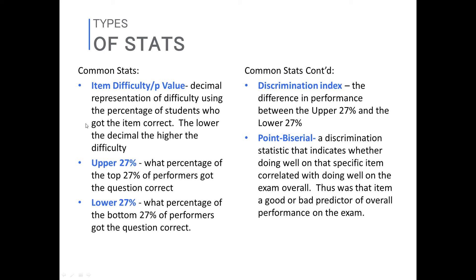The discrimination index takes everything a little bit further — it's the difference in performance between your upper and lower 27%. It tells you: did this question discriminate between my best performers and my worst performers? That's generally something you're looking for a question to do, though not always for mastery-level questions. The discrimination index basically takes the percent of the upper 27% and subtracts the percent of the lower 27% to give you a number. The higher that number, the more discriminating it is.